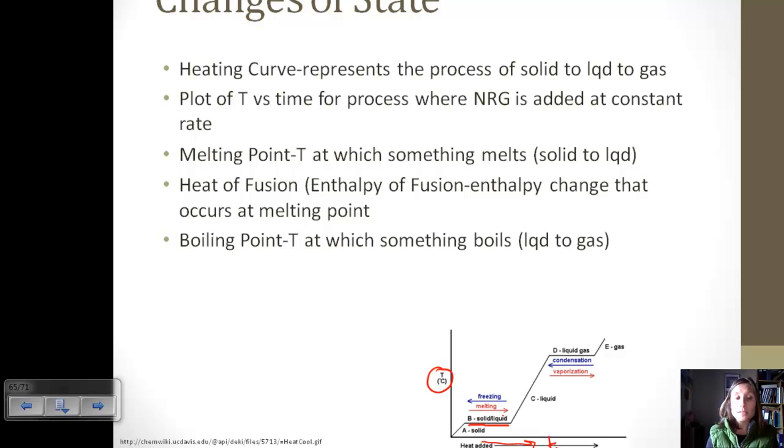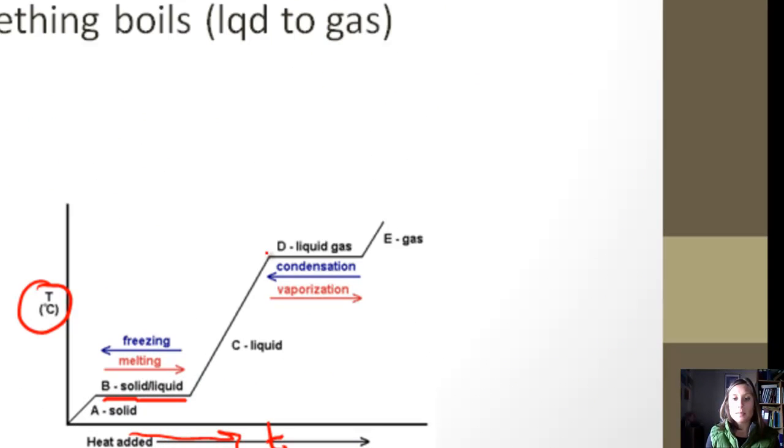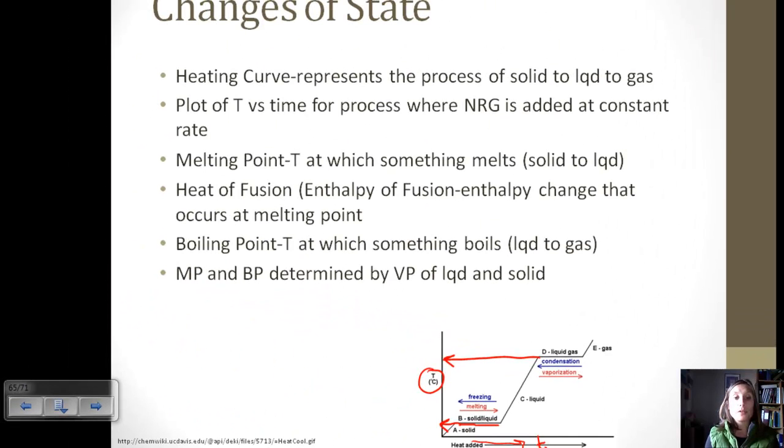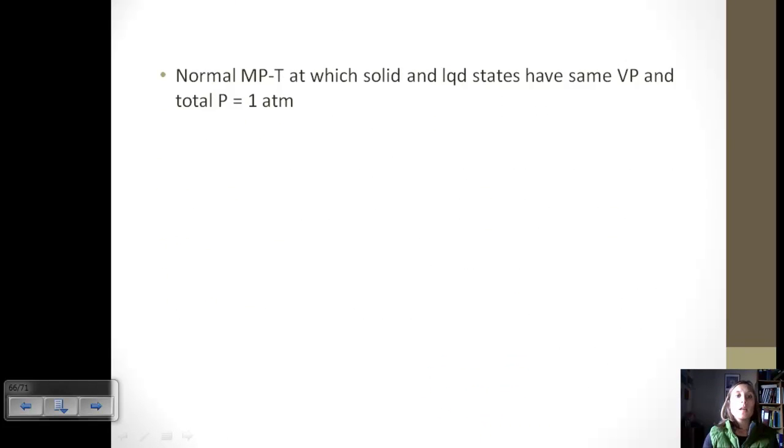The boiling point, very similar. Instead of being melting, it's boiling. So, the temperature at which something boils. And we can measure that across and find that value, just like we can measure across and find the melting point. Melting point and boiling point are determined by the vapor pressure of the liquid and the solid. Melting point is the point where the liquid and the solid have equal vapor pressures. So, we would say that they are at equilibrium. Their vapor pressures are the same.